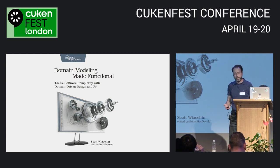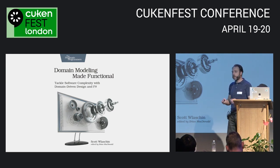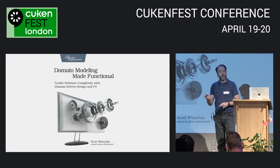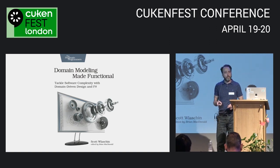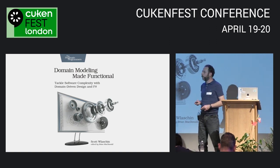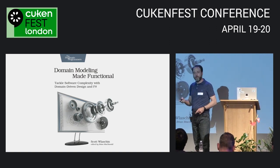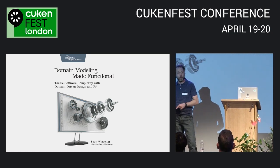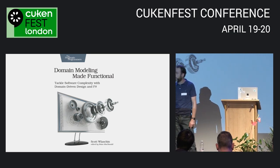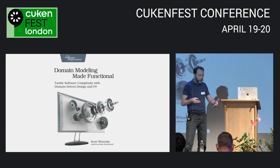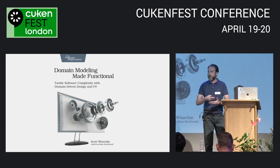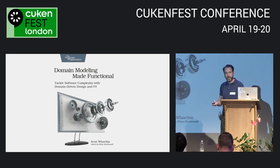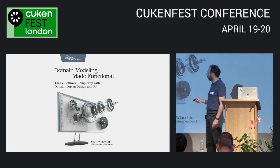Armed with this composable type system, what it allows you to do is describe what something should do without having to describe how it does it. The minute I saw that I thought: there's another language I know that allows you to describe what something should do without describing how — and that's Gherkin. So for me there's a huge overlap between a functional programming language and Gherkin.